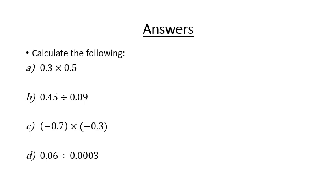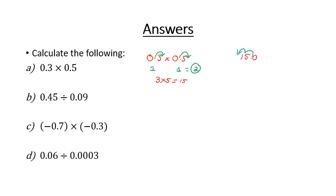In our first question we've got 0.3 multiplied by 0.5. When multiplying decimals, we want to make them whole numbers. We move the decimal point one spot on each number — a total of two spots — giving us 3 times 5. We know 3 times 5 is 15. With 15.0, we move the decimal place back two spots, so our answer is 0.15.